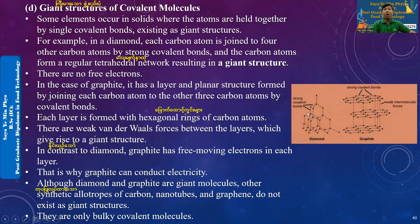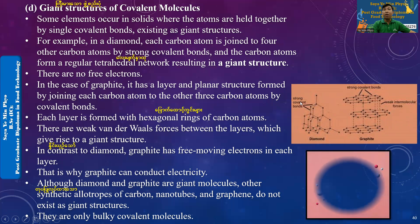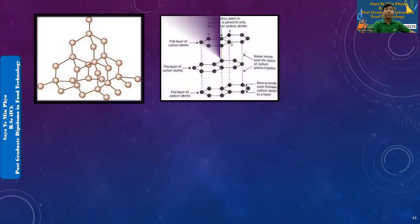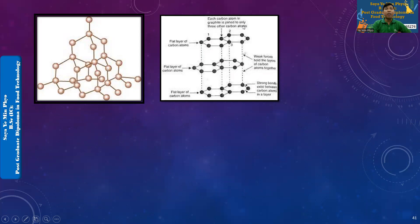To go to the next level, you have to use the graphite. Now, the graphite is using the graphite. In graphite, there are two different types of graphite. The graphite has to be used in the graphite.